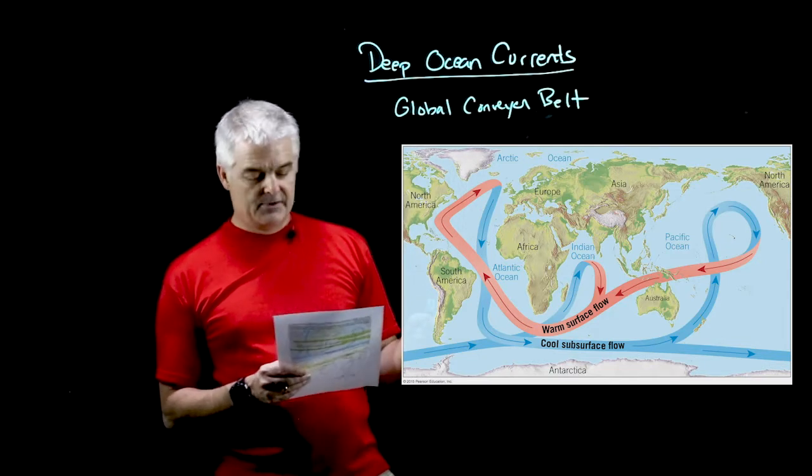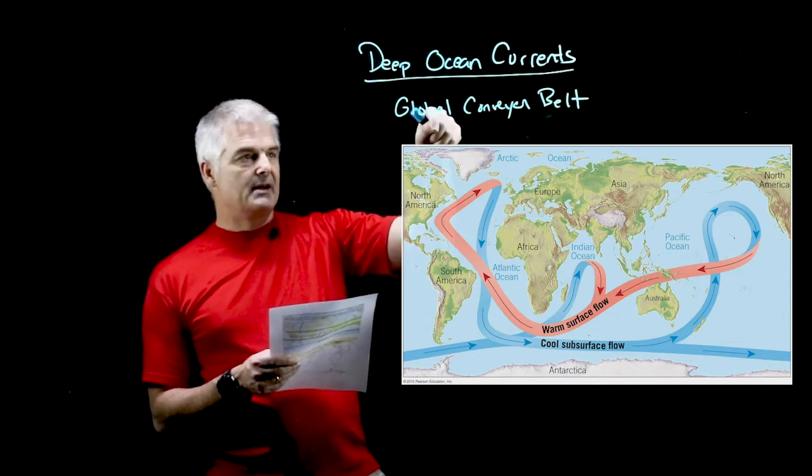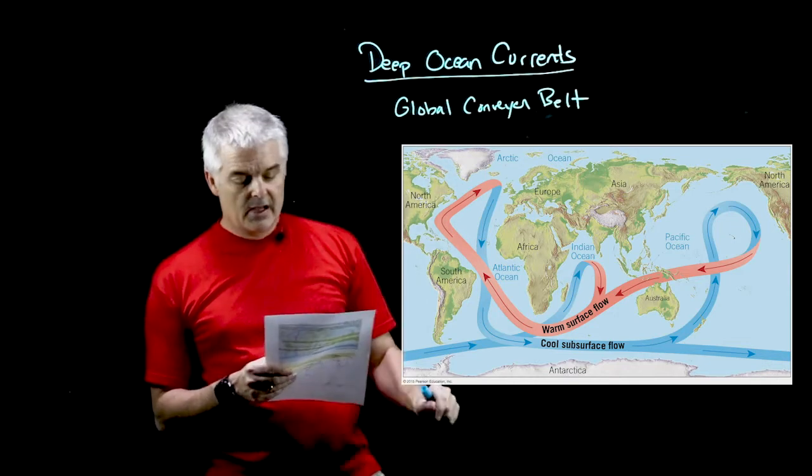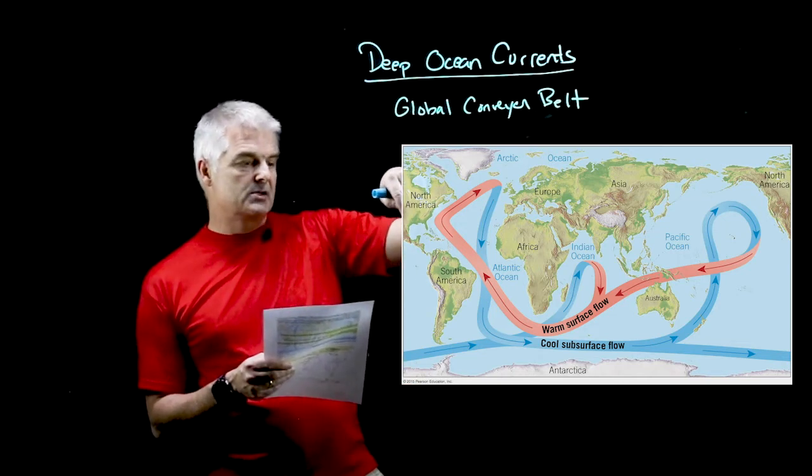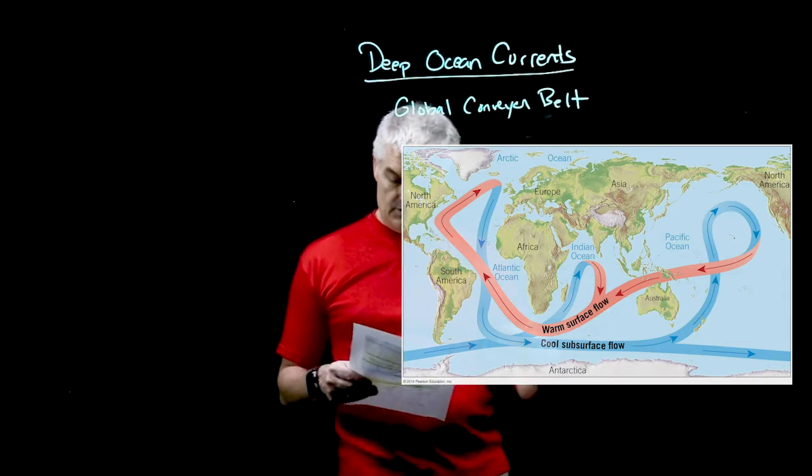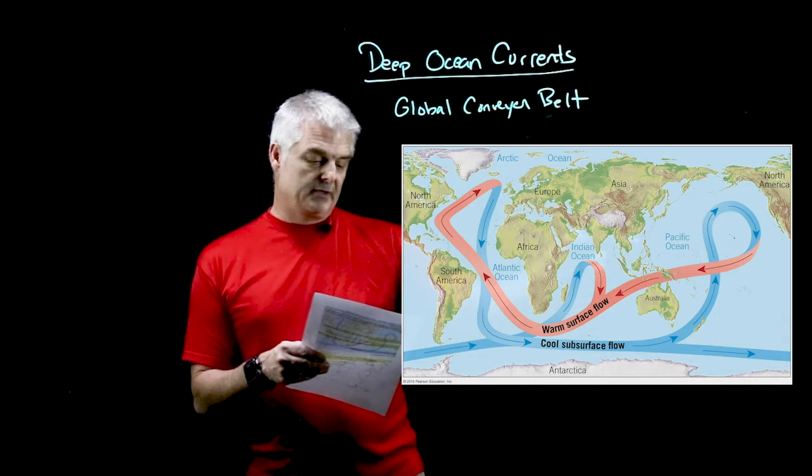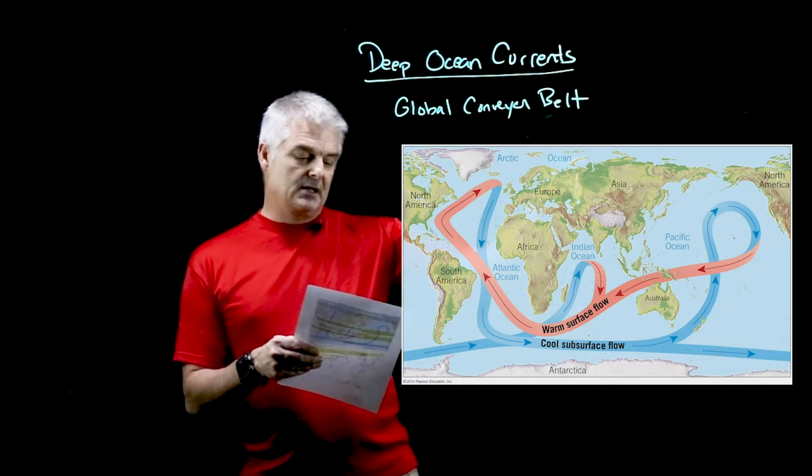Cold dense water forms at the poles here between North America and Europe, and then that water sinks and creates a river of water deep under the water that goes all the way through the middle of the Atlantic Ocean. Once it reaches the Antarctic area it zooms up and there's kind of a split, and then it goes up to the Pacific.